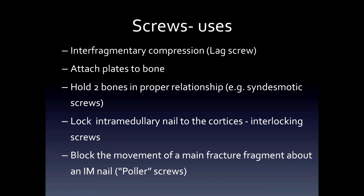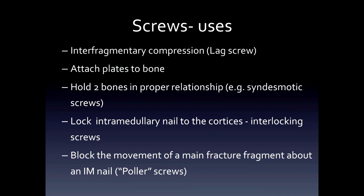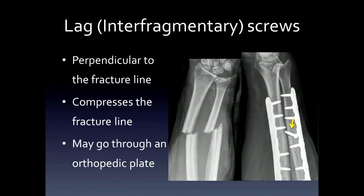There are several uses for screws. First is interfragmentary compression, or lag screw, which brings the fracture fragments together. Second is to attach plates to bone. Third is to hold two bones in proper relationship, such as the syndesmotic screw. Fourth is intramedullary locking screws, which affix the intramedullary nail to the cortices — called interlocking screws. Fifth is polar screws, which block the movement of a main fracture fragment about an intramedullary nail. Here you can see the unreduced fracture on the left and the reduced and fixed fracture on the right, with an interfragmentary screw across the ulnar fracture.